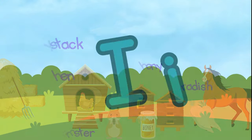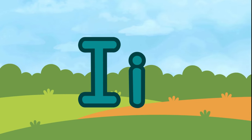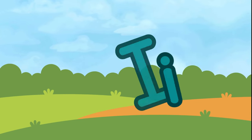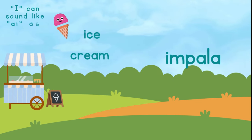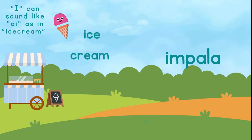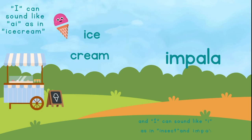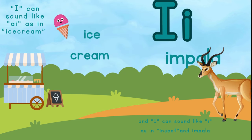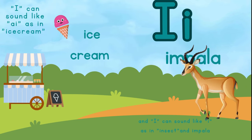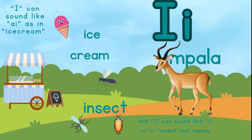This is the letter I. And I is for ice cream. I can sound like AI as in ice cream. And I can also sound like I as in insect and impala. I is for impala. And I is for insect.